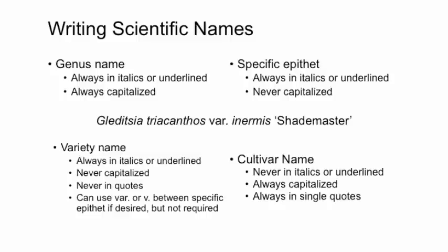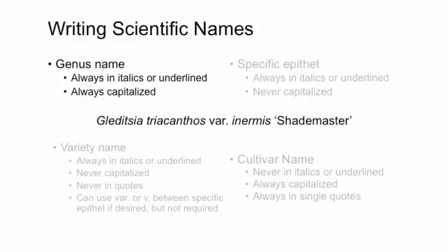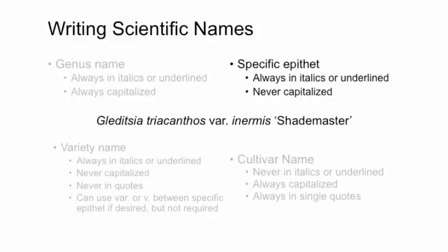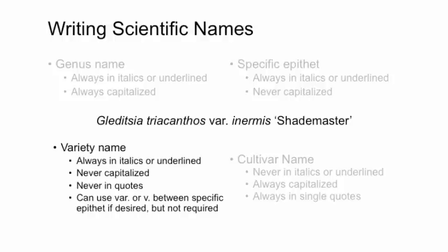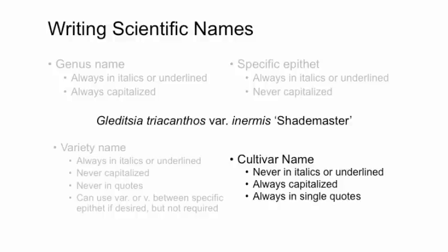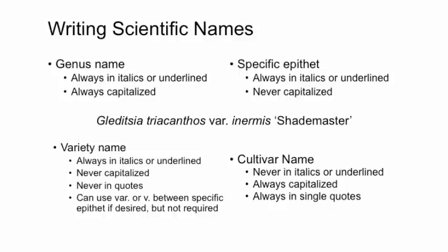The writing of scientific names follows specific rules. Genus names should always be in italics or underlined and are always capitalized. The specific epithet is always in italics or underlined and never capitalized. Variety names are written like the specific epithet — in italics and not capitalized. Cultivar names are not in italics or underlined, are always capitalized, and always appear in single quotes. Understanding these rules can provide additional information about the plant being evaluated.